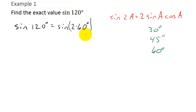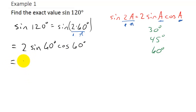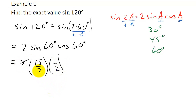Since 2 times 60 matches the form 2a, here 60 is our a. Plugging 60 degrees in for a gives us 2 times sine of 60 times cosine of 60. Sine of 60 is √3/2 and cosine of 60 is 1/2. So this is 2 times (√3/2) times (1/2). The 2's cancel, leaving us with √3/2.